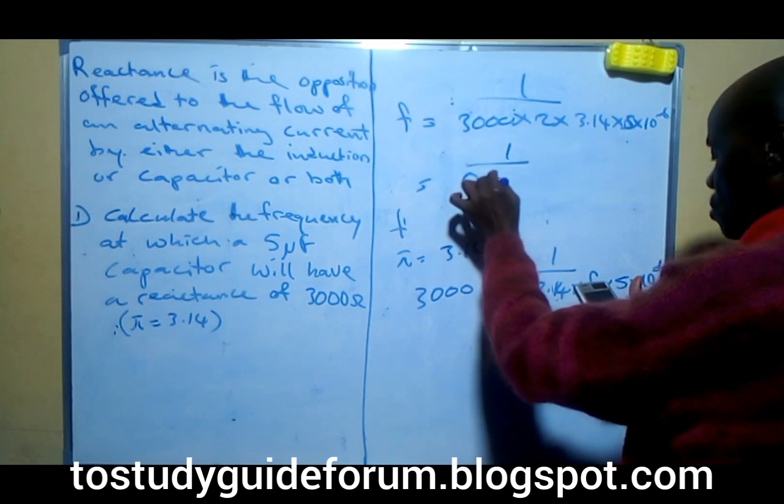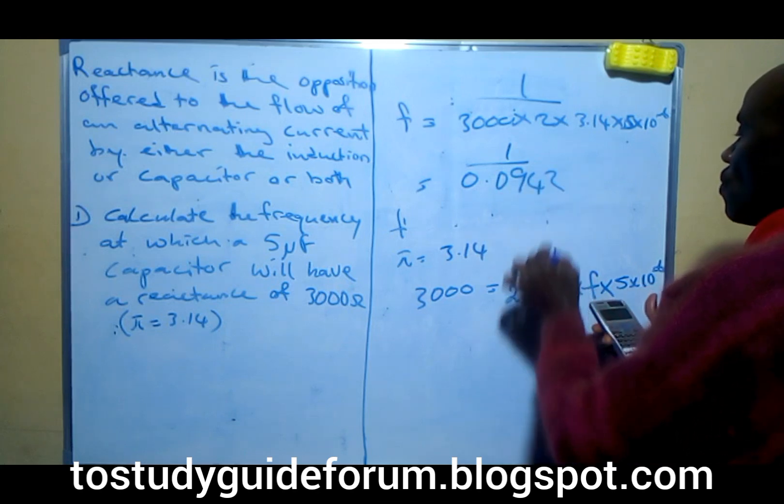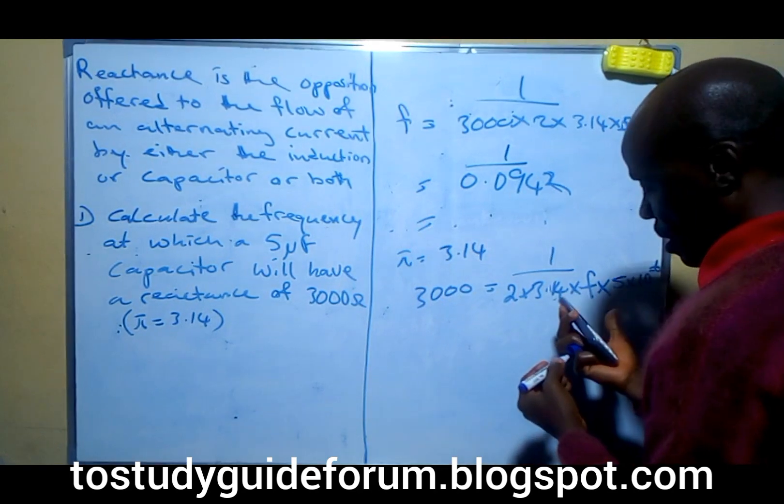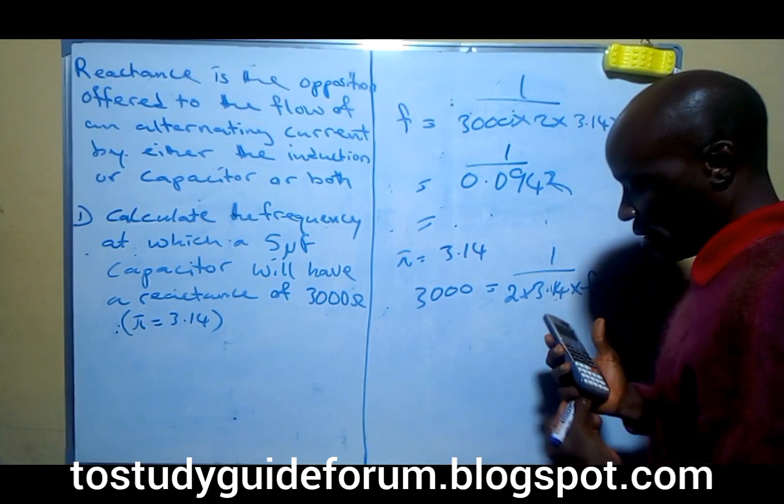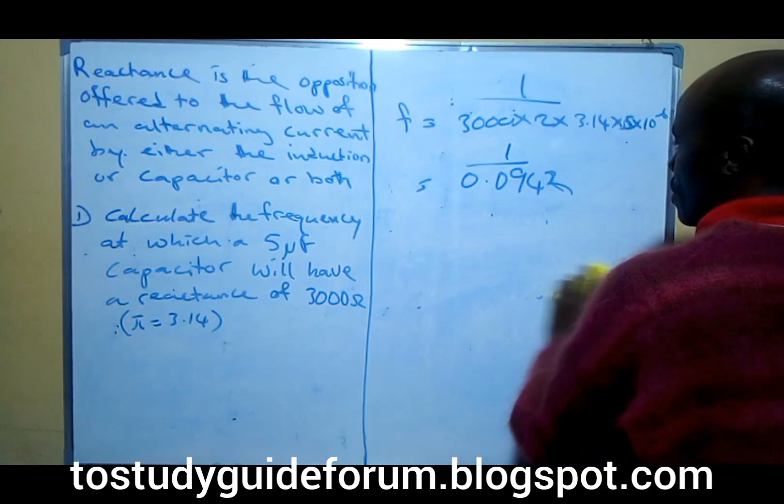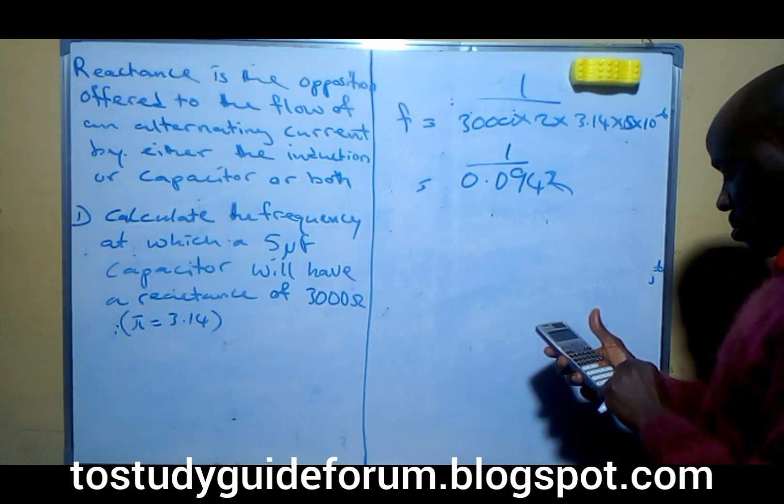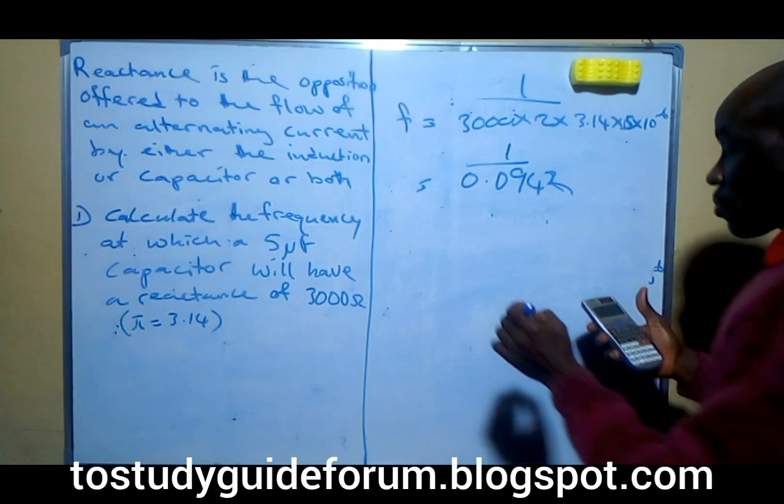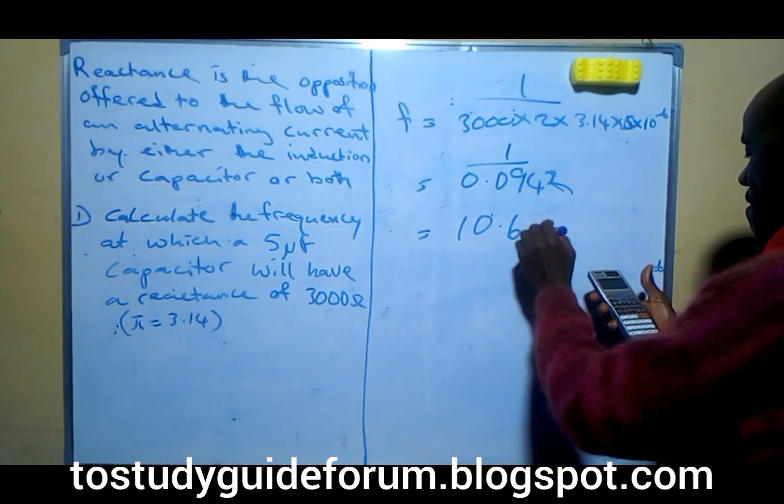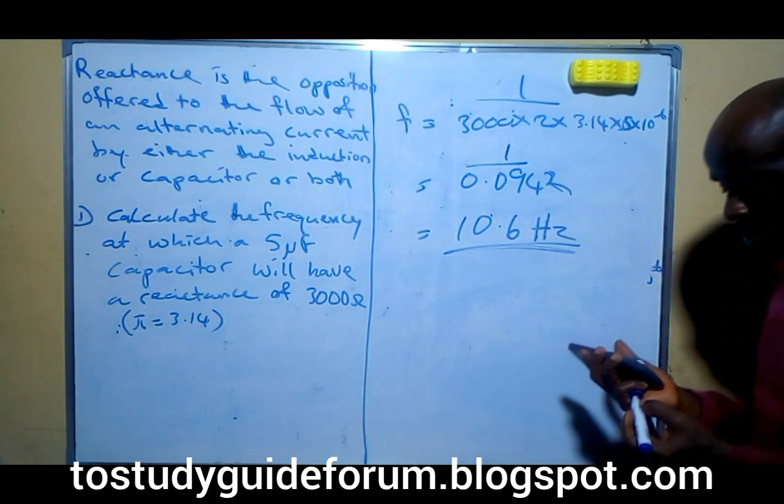1 over 0.09424. So taking the inverse, we have f equal to 10.6